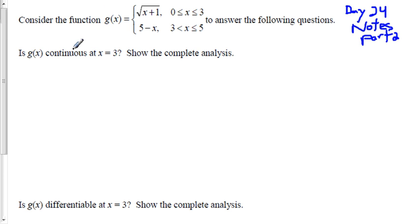All right, we're at Calculus Unit 3, Day 24, Notes, Part 2. We're going to consider this function g of x with two parts, a piecewise function: square root of x plus 1 from 0 to 3, and then 5 minus x from 3 to 5, and then answer the following question.